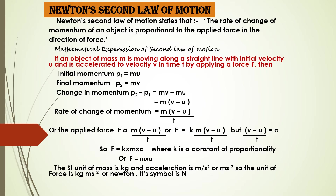Now we shall derive a mathematical expression for Newton's second law of motion. Consider an object of mass m moving along a straight line with an initial velocity u, accelerated to a final velocity v in time t by applying a force F. The initial momentum p₁ = m × u, and the final momentum p₂ = m × v. The change in momentum p₂ − p₁ = m(v − u). The rate of change of momentum is m(v − u) / t.